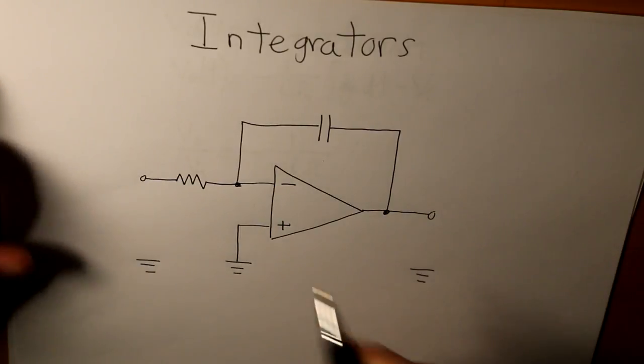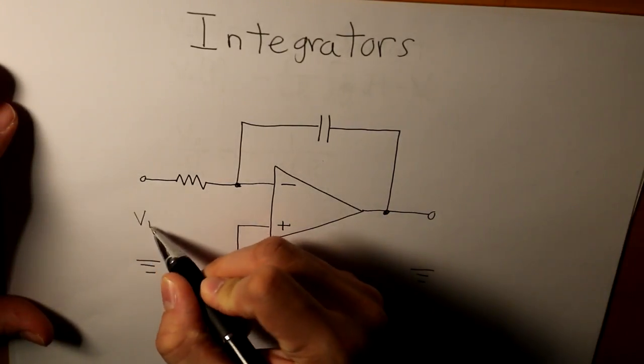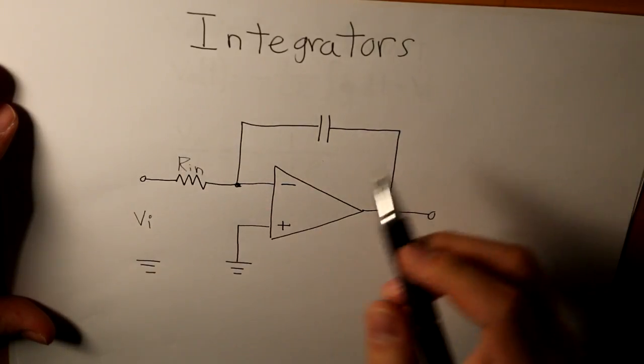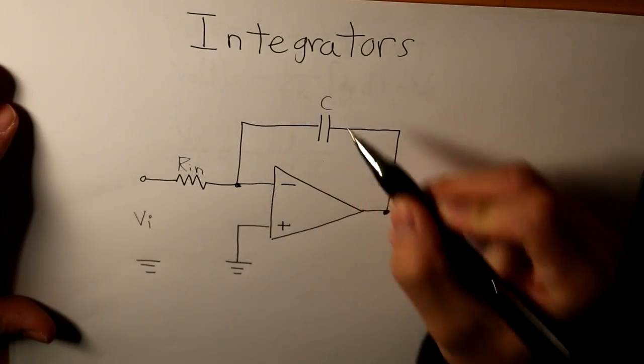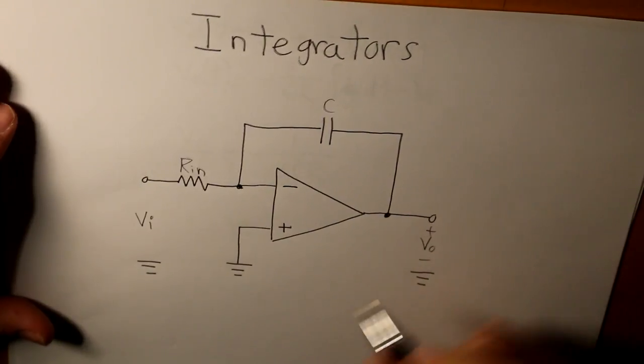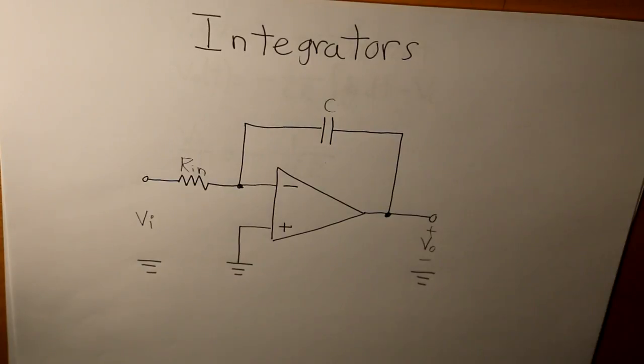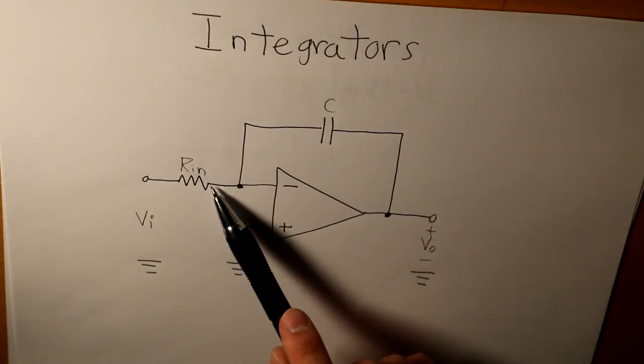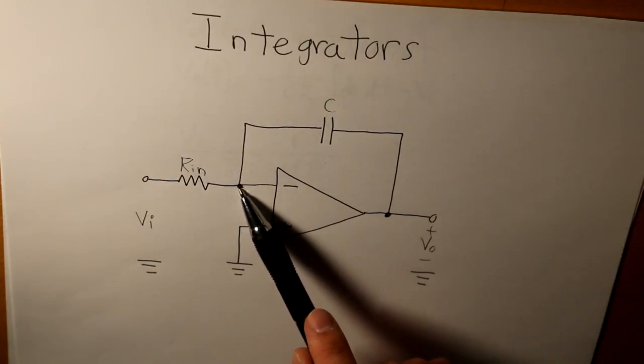First, I'm going to label what our integrator components are. Here we have the input voltage, our input resistor, then we have our capacitor here, and finally we have our output voltage here. Essentially, we have the current that starts from the input voltage, then it goes through the input resistance, travels into the negative terminal.